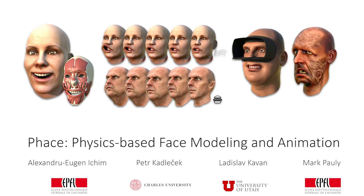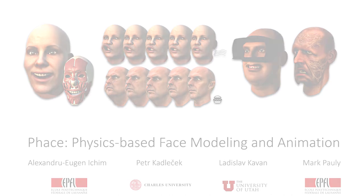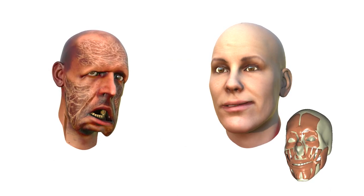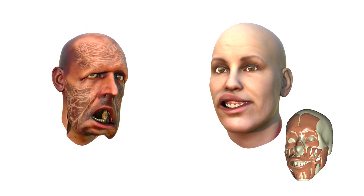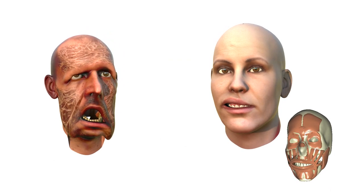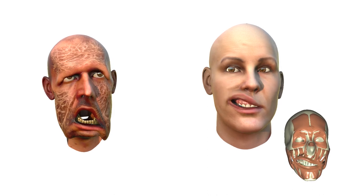We present a novel physics-based approach to facial animation. Contrary to commonly used generative methods, our solution computes facial expressions by minimizing a set of nonlinear potential energies that model the physical interaction of passive flesh, active muscles, and rigid bone structures. By incorporating temporal dynamics and external forces, our method enables a variety of advanced animation effects.